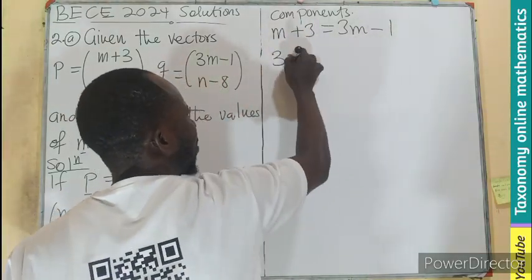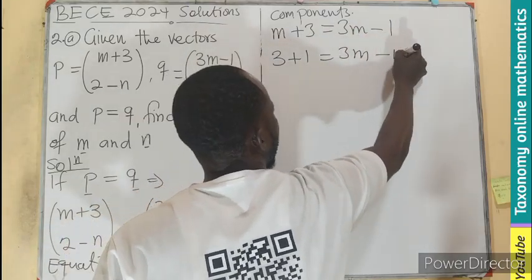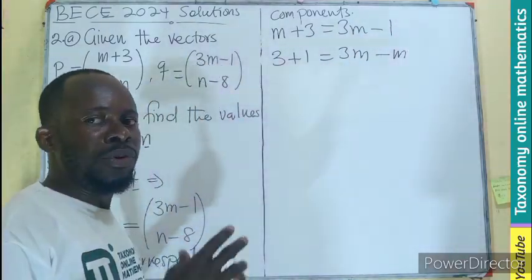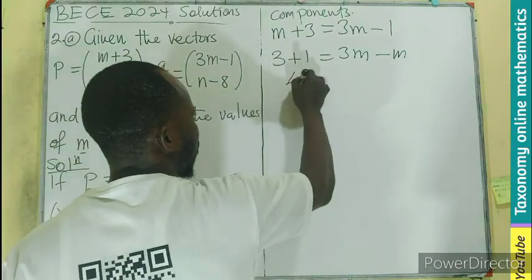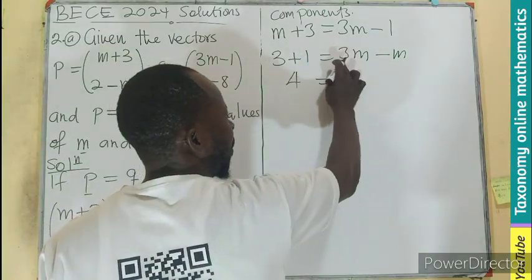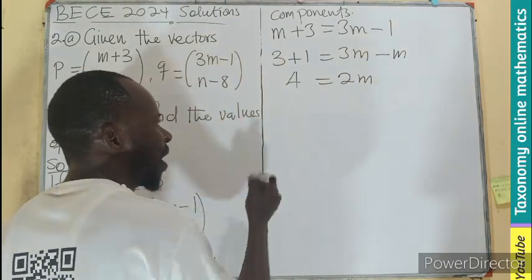So this is going there, this is coming here, plus 1, 3M minus M. We are swapping the position of those two items. So this will be giving you 4. And this will be giving you 3 minus 1, that will be 2M. So we divide both sides.